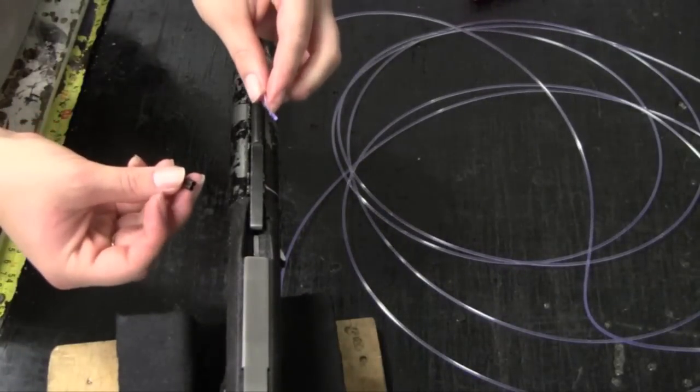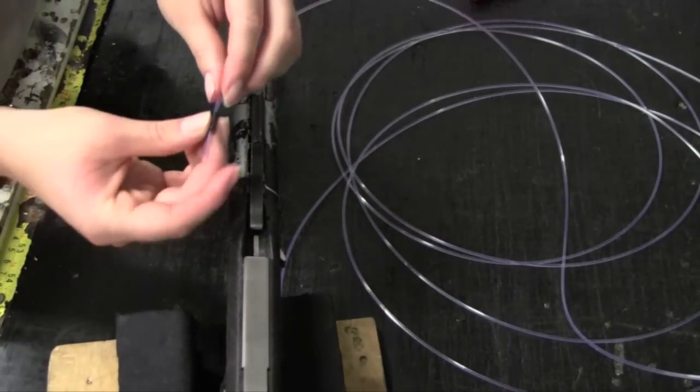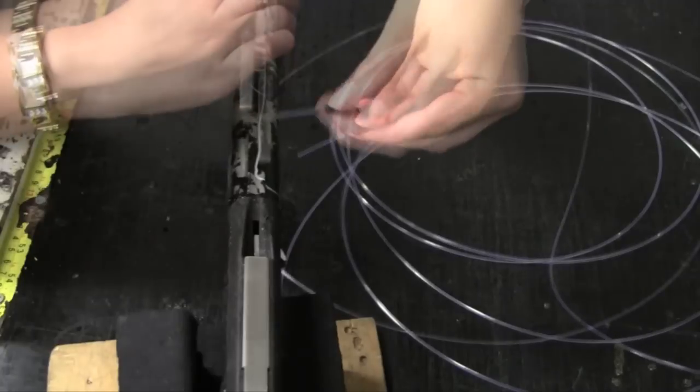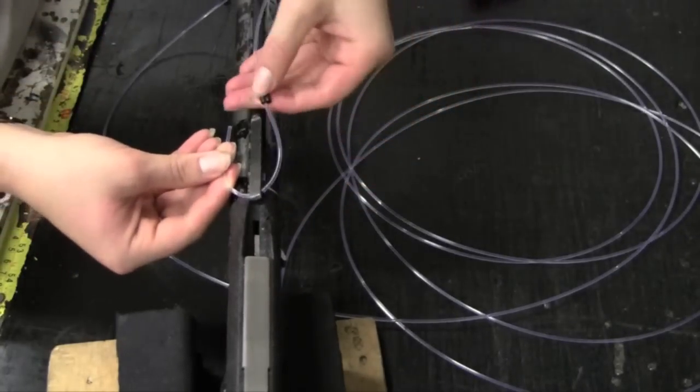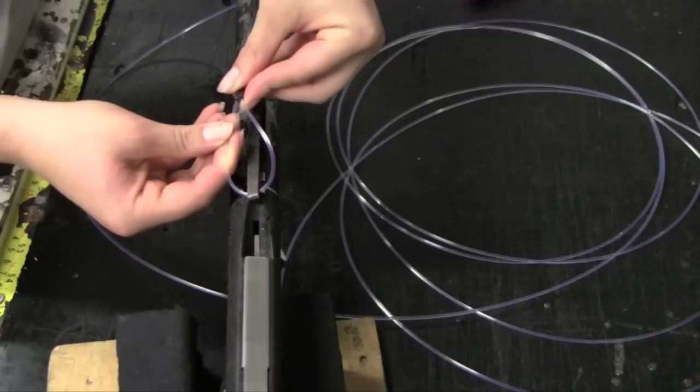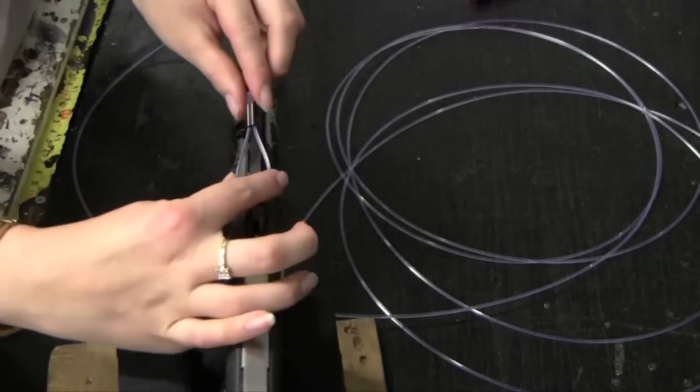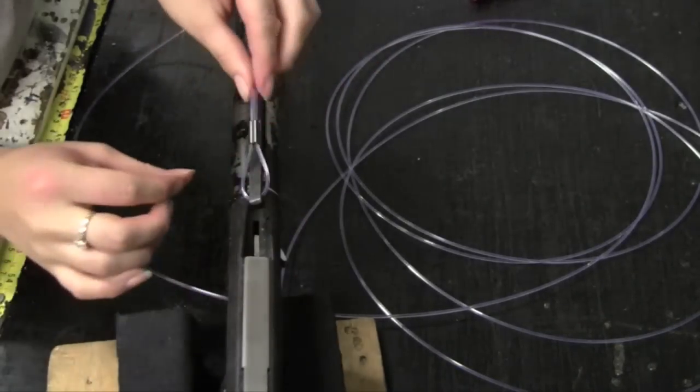Take your crimp and insert one side of the mono into one side of the crimp. Insert the mono through the hole at the end of your shaft. Then take the other side of the mono and put it into the other side of the crimp. Pull both tight until your loop is the desired length.